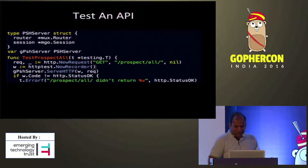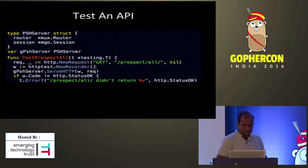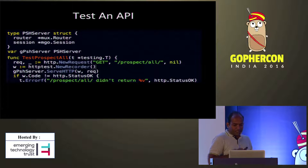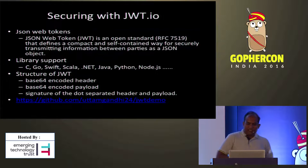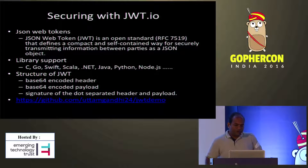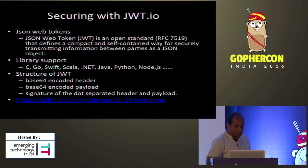We have seen how to write a web service and how to test it. The example we saw was an open service — anybody can just connect and get responses. However, we want to make our service secure. We can add JWT to do that.